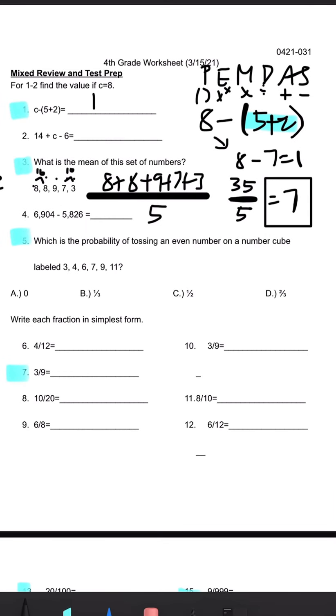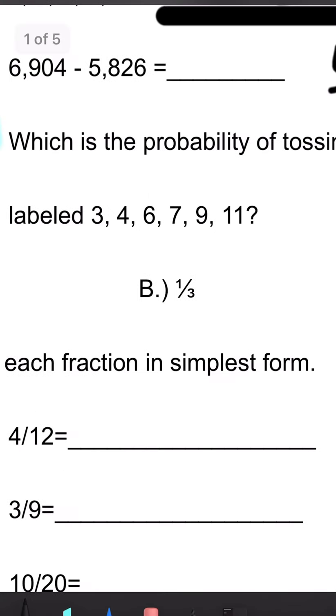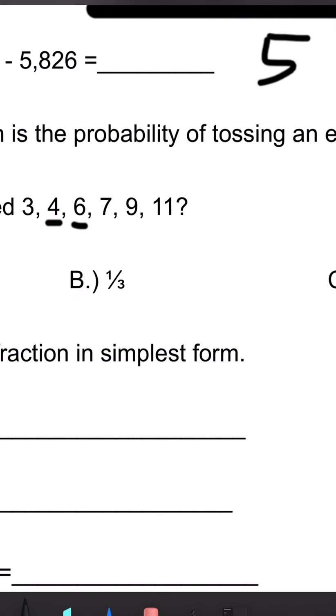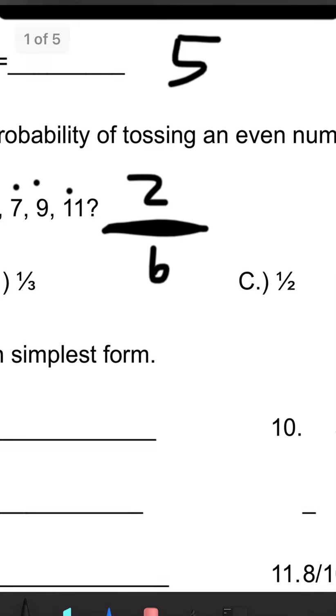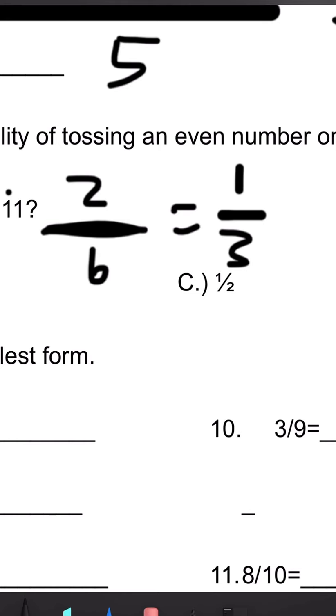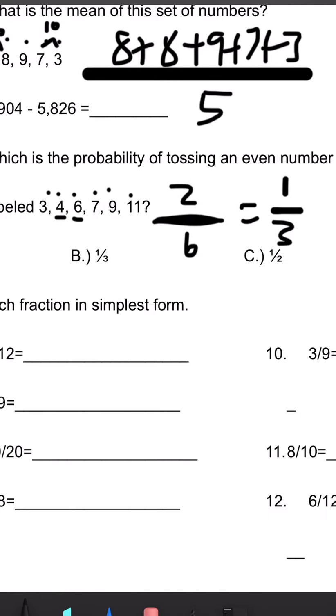Number 5, which is the probability of tossing an even number on a number cube labeled 3, 4, 6, 7, 9, and 11. So we're just going to look for the even numbers here. We know that 4 is an even number and 6 is an even number. So we'll be doing 2 over the total number of numbers, which is 6. And if we simplify, we get 1 third. So our answer is B.